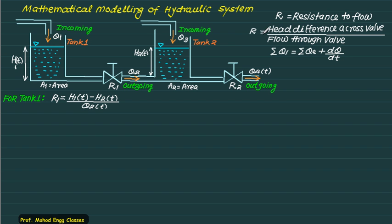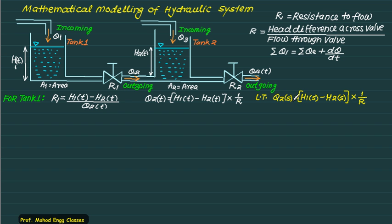Now consider tank 1 and write the equation for resistance R1. For this resistance, the head difference across the valve is H1T minus H2T, and the discharge through this valve is Q2. So R1 equals (H1T minus H2T) divided by Q2T. Rearranging, Q2T equals (H1T minus H2T) multiplied by 1/R1. Taking the Laplace transform: Q2S equals (H1S minus H2S) multiplied by 1/R1. The 1/R1 term is constant. This gives the output Q2S via a summing point and a block of 1/R1.